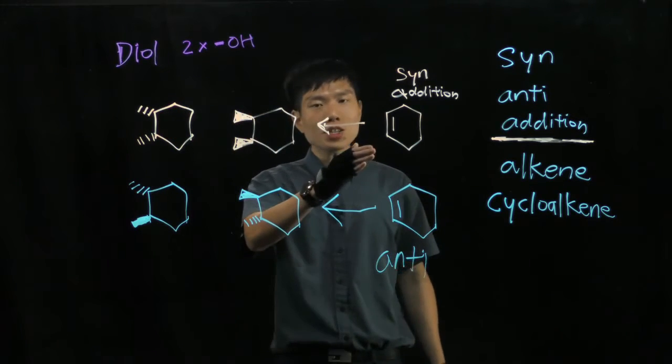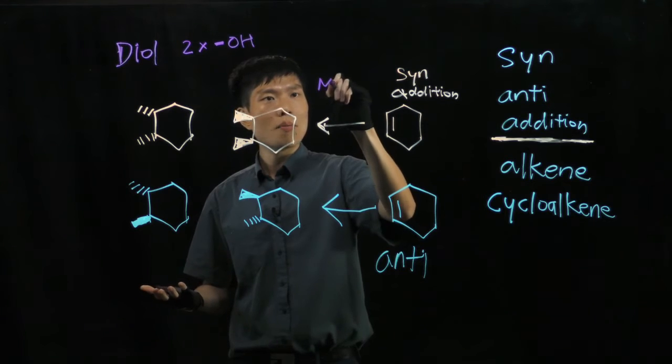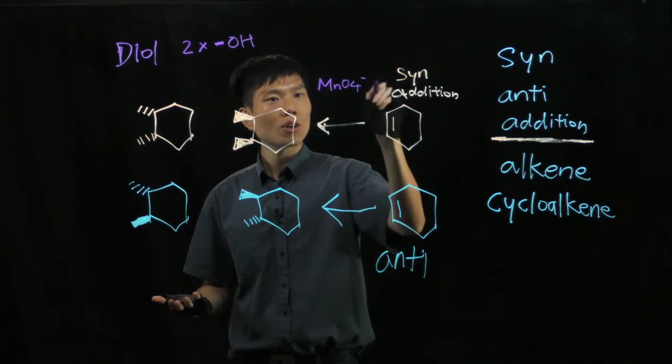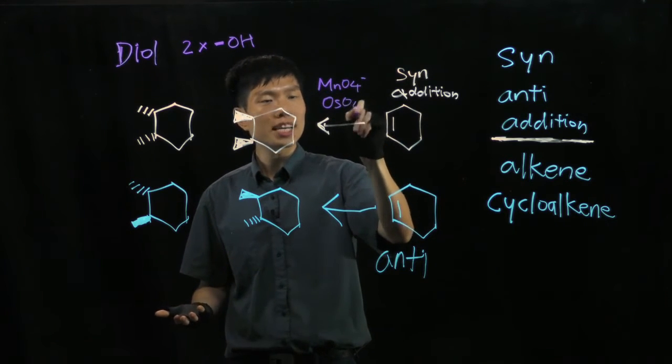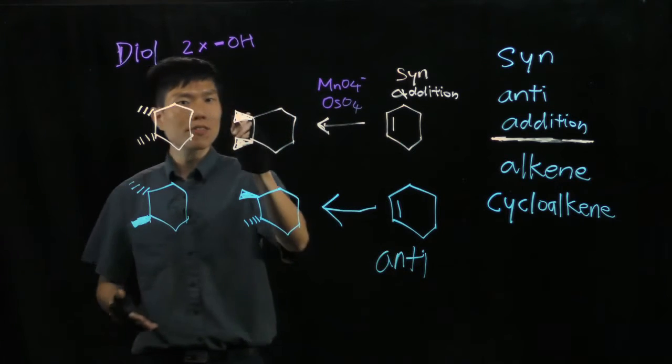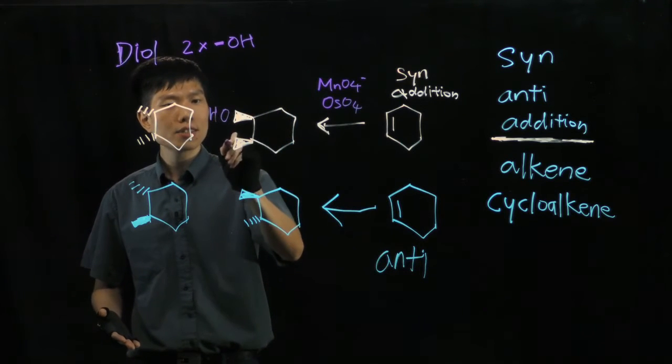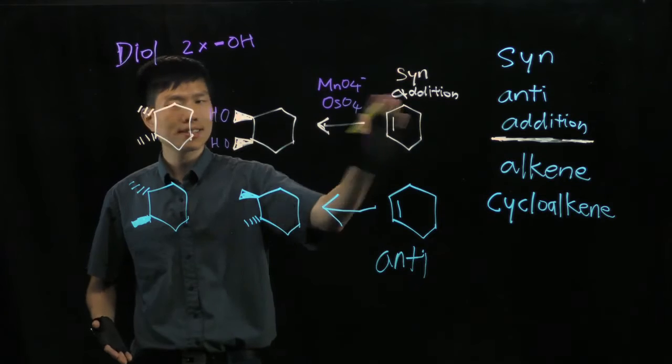Now for syn-addition, we need to use reagents such as permanganate or osmium tetroxide. And then our product will have OH added to the same side of the plane, over here.